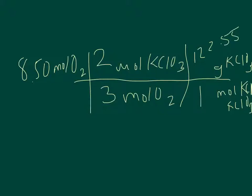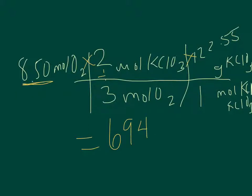I then plug into my calculator: 8.5 times 2 divided by 3 times 122.55. My answer is 694.45 grams of potassium chlorate.